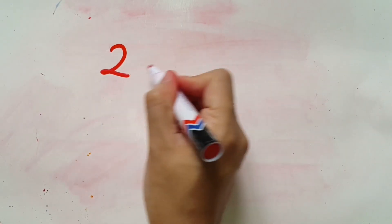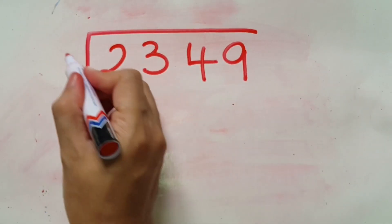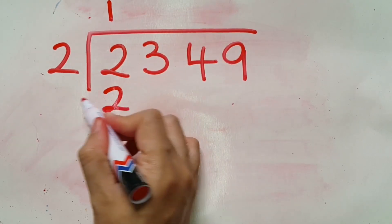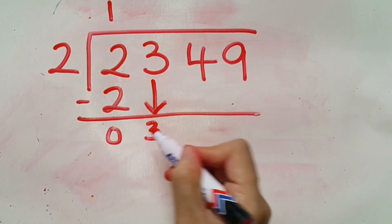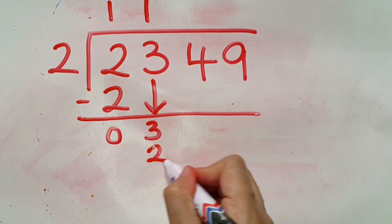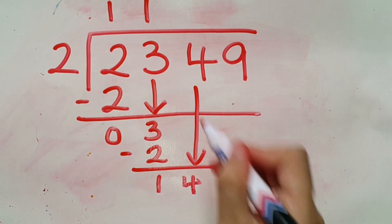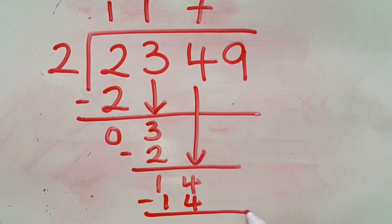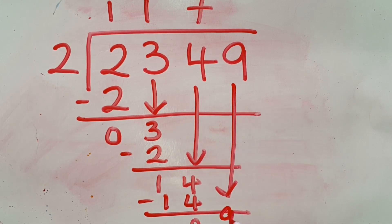Now it's time to learn how to do division. Start with two thousand three hundred and forty-nine divided by two. One times two is two, so two minus two is zero. Bring down three — one times two is two, so three minus two leaves a balance of one. Bring down four to make fourteen; seven times two is fourteen, so no balance there.